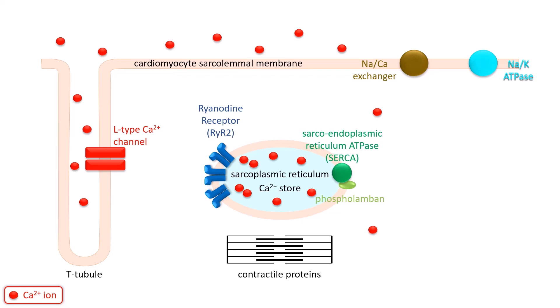When the cardiac muscle cell is resting during diastole, it contains a very low cytoplasmic concentration of free calcium ions, and the membrane is essentially impermeable to calcium ions, keeping them outside. The cells do however contain substantial stores of calcium held within the sarcoplasmic reticulum.